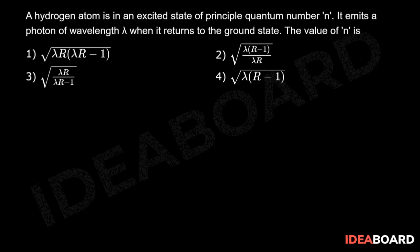We know that our general formula: 1 upon lambda is equal to R into 1 upon N1 square minus 1 upon N2 square.